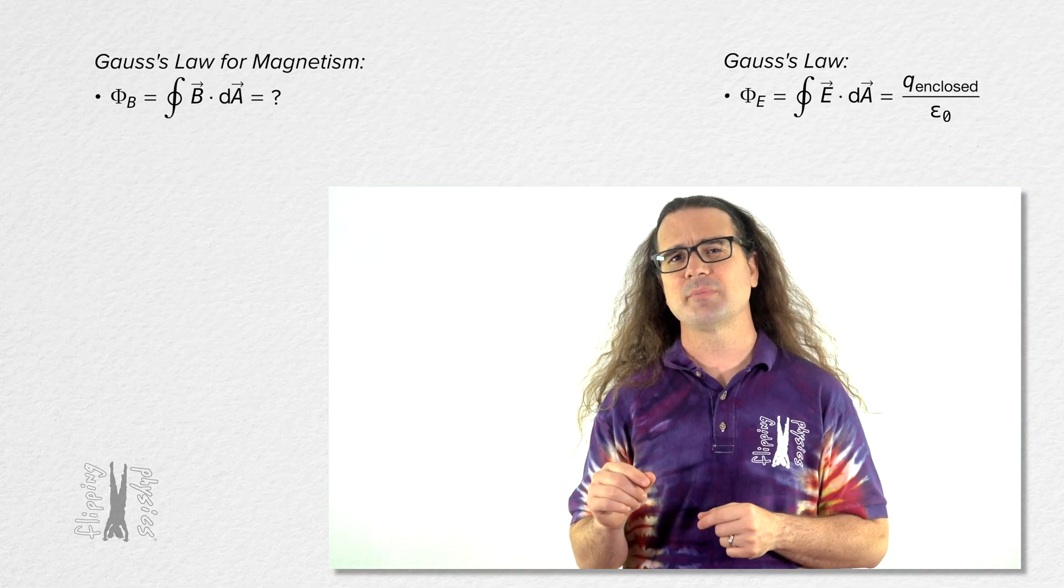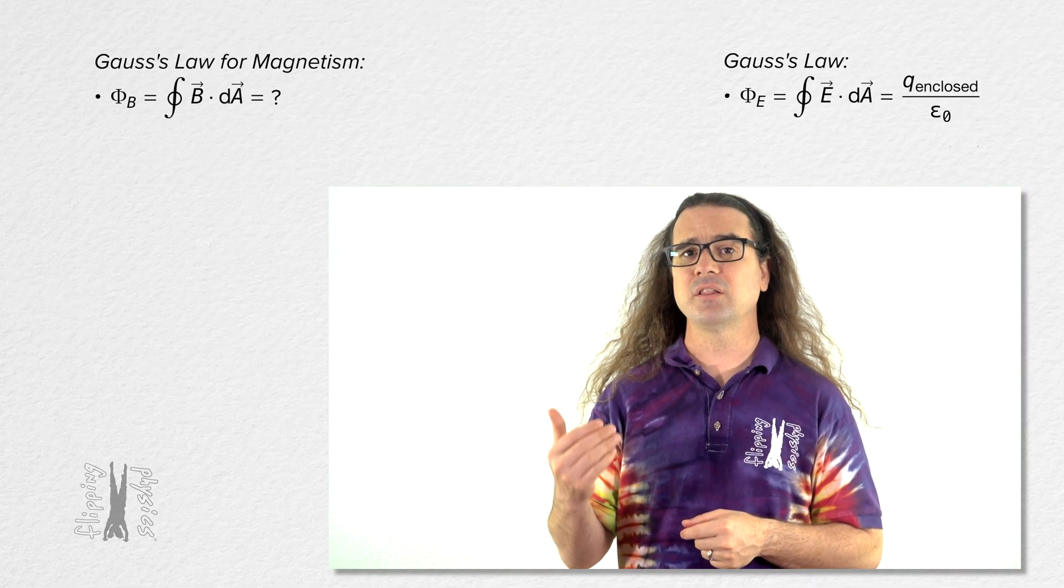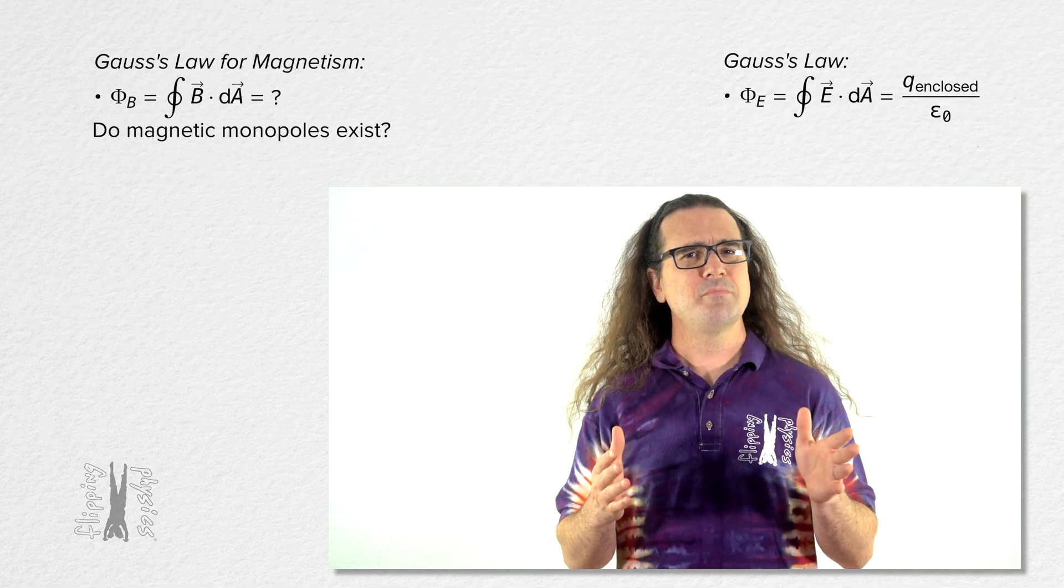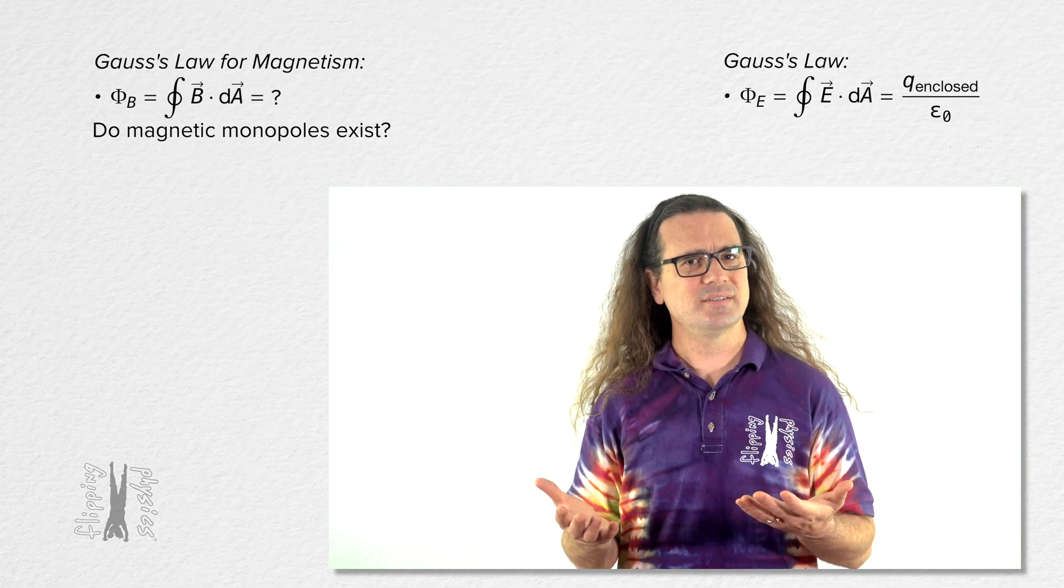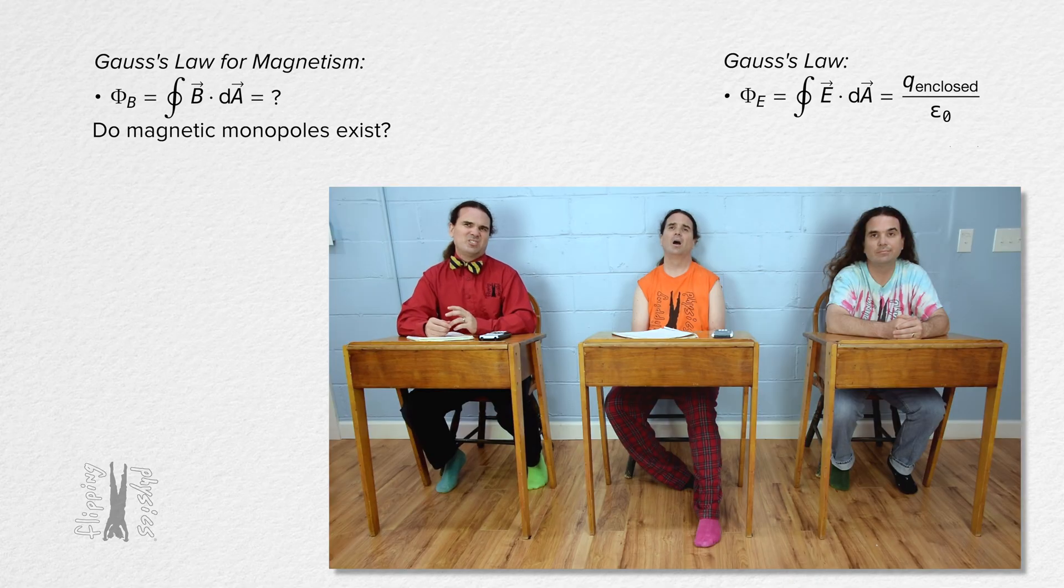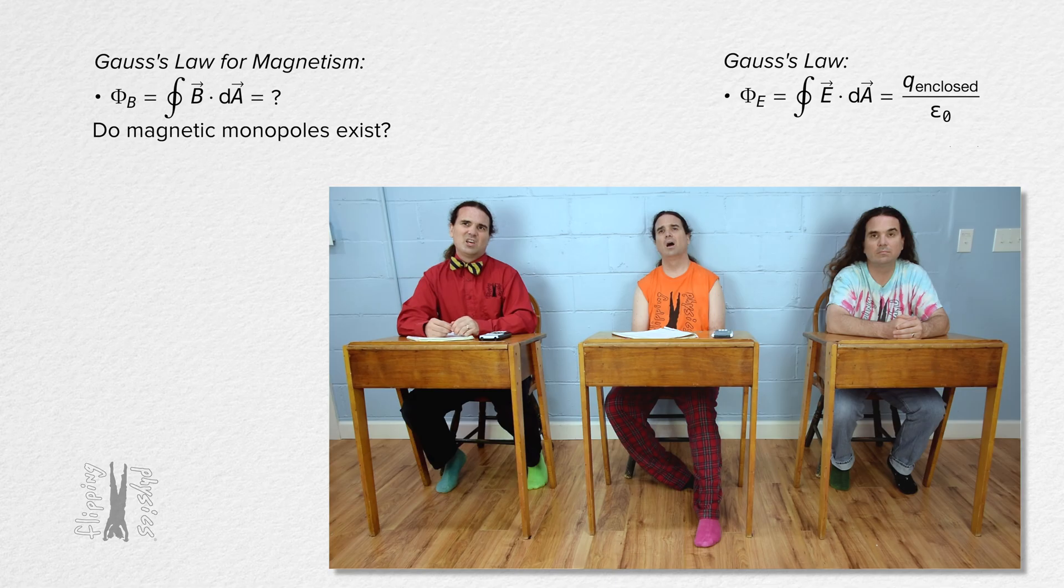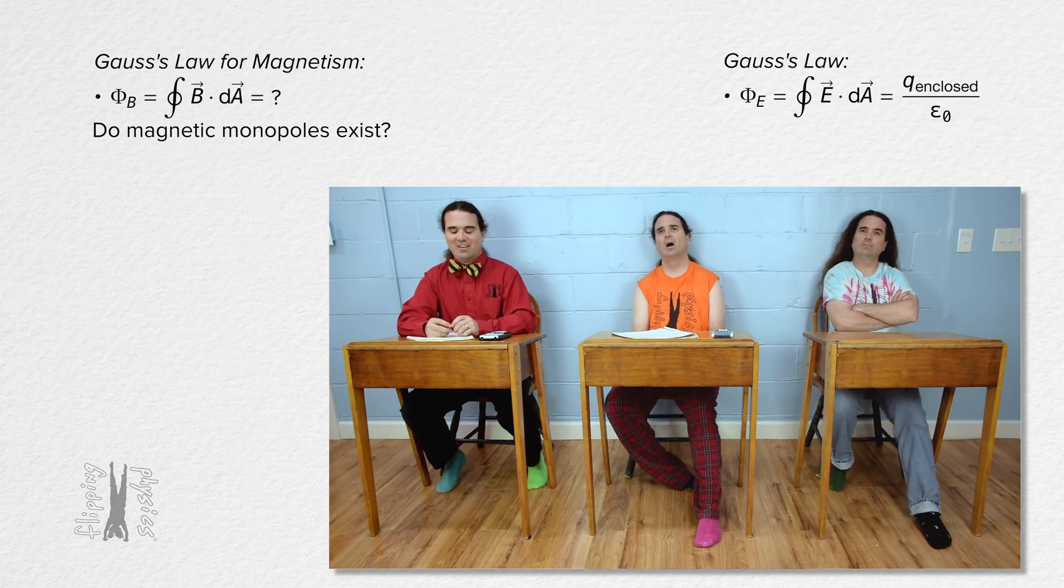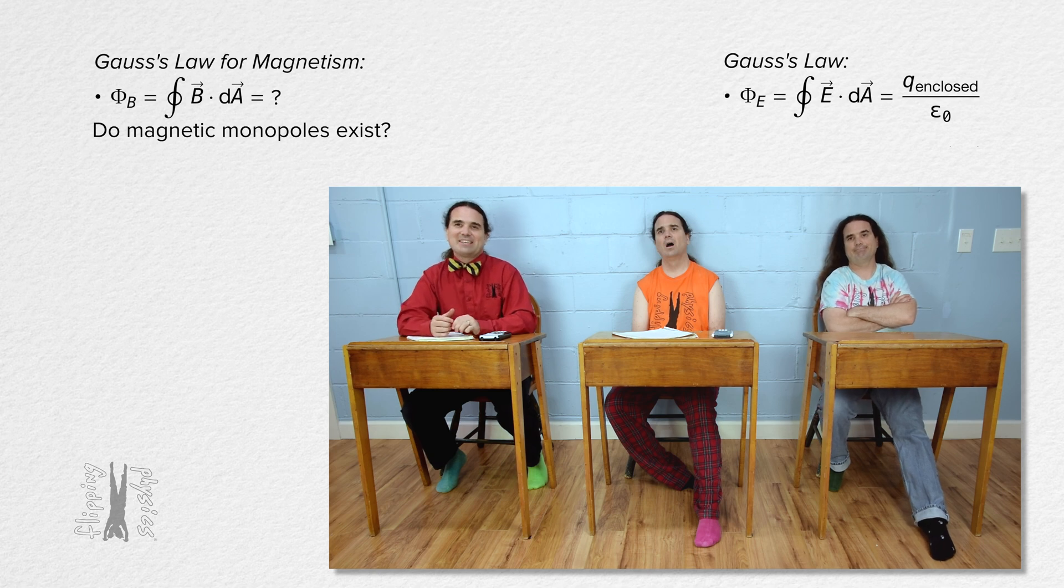To help us determine what magnetic flux through a closed surface equals, remind me Billy, do magnetic monopoles exist? In other words, can you have a north magnetic pole without also having a south magnetic pole connected to it, or a south magnetic pole without also having a north magnetic pole connected to it? Okay yeah, I remember this.